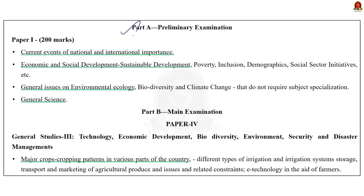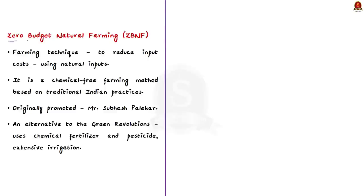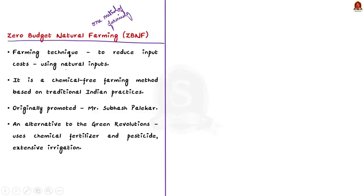There are many methods of cultivation of crops. Zero budget natural farming is a farming technique that tries to reduce input cost by encouraging farmers to use natural inputs rather than agricultural chemicals like insecticides and fertilizers. In other words, zero budget natural farming is a chemical-free farming method which tries to reduce input cost based on traditional Indian practices.